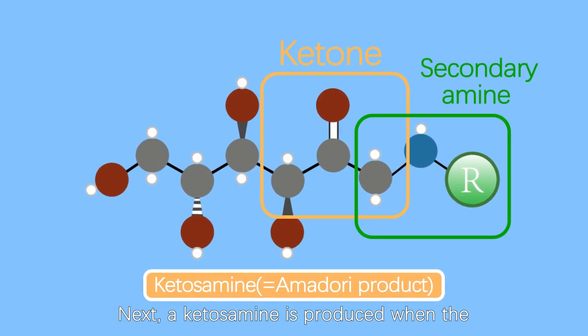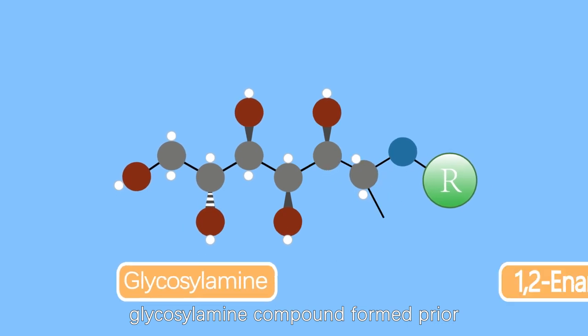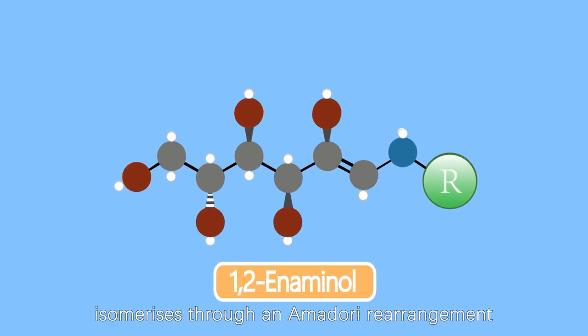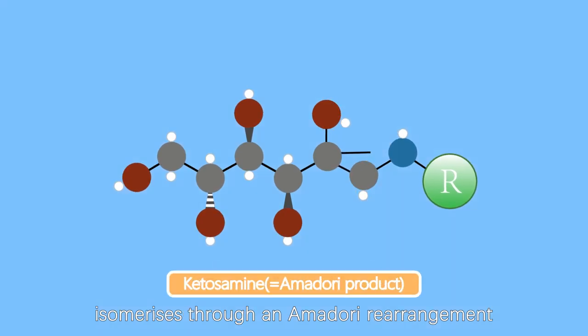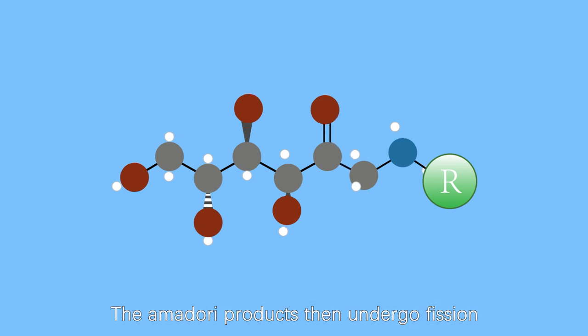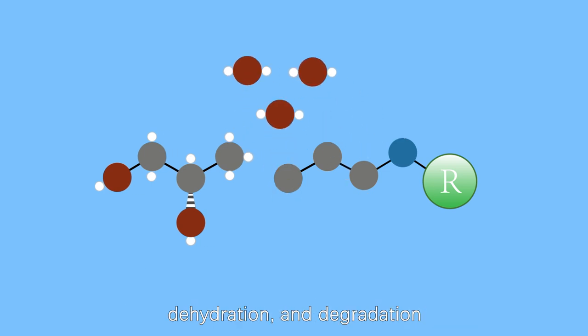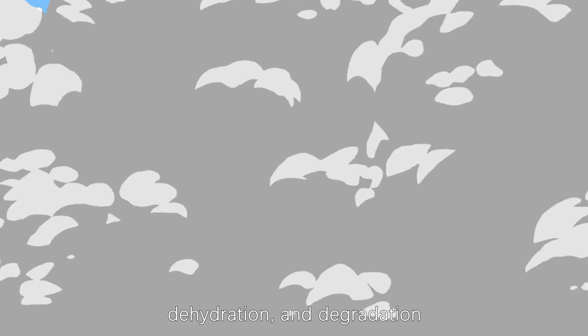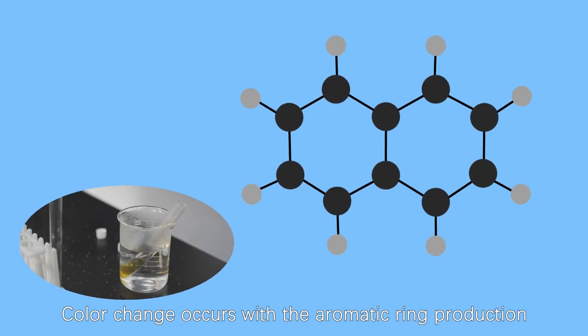Next, a ketosimine is produced when the glycosylamine compound formed prior isomerizes through the Amadori rearrangement. The Amadori product then undergoes fission, dehydration, and degradation. Color change occurs with aromatic ring production.